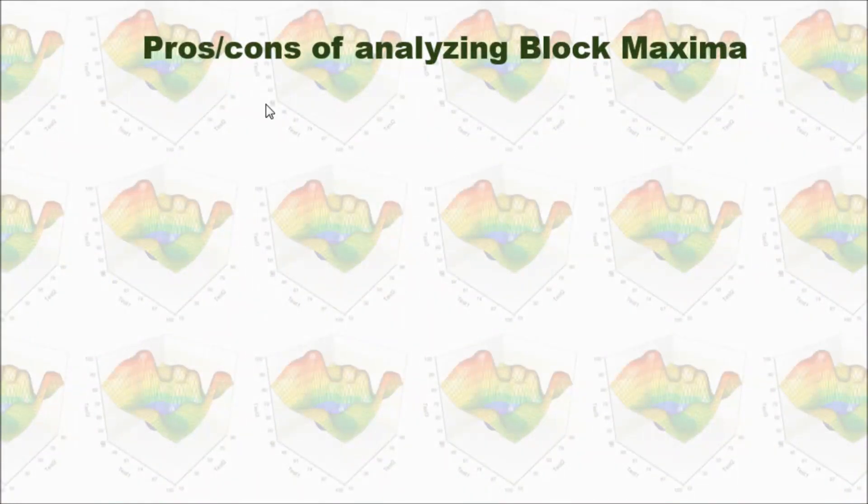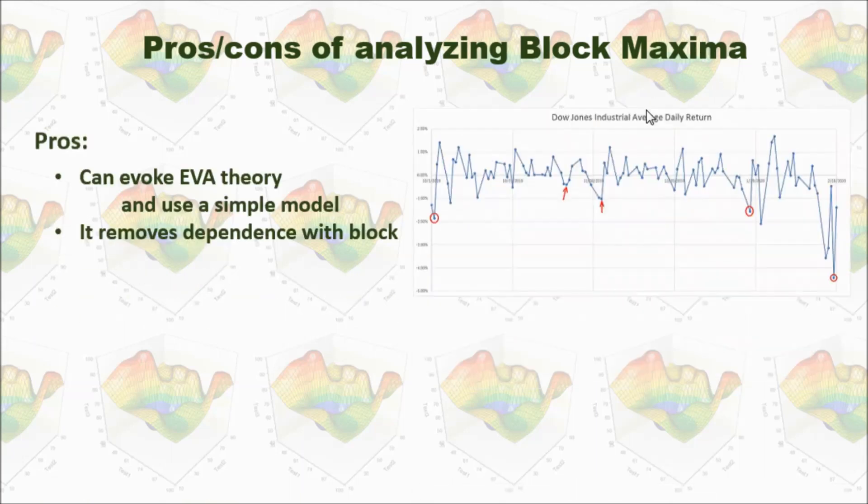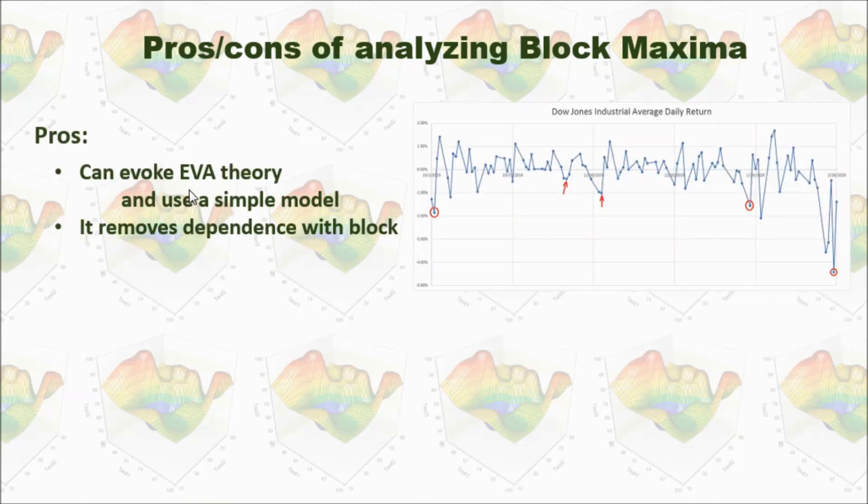So what are the pros and cons of analyzing block maximum? First, it can evoke EVA theory and use a simple model. And it removes the dependence with block. You can see here, there is a significant market downturn for several days consecutively. And because we are picking only one data point for every month, this dependency will be removed.